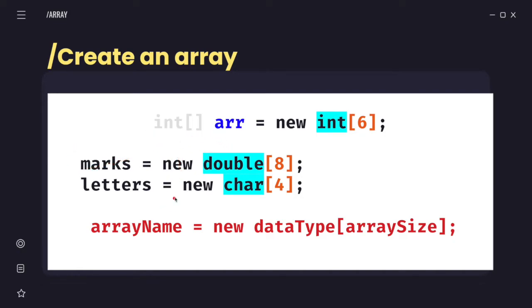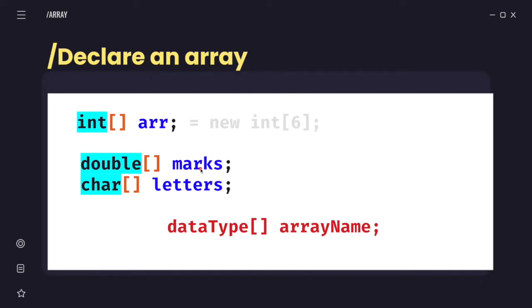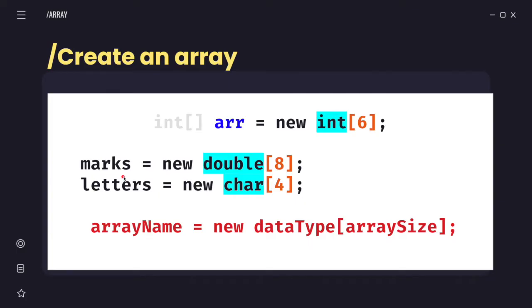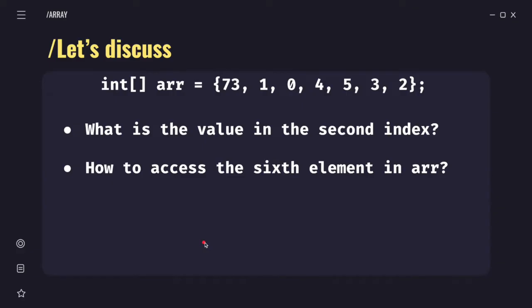So create an array - we have this template here. Array name equals to new data type in bracket array size. So earlier our example - array arr equals to new int 6, so array size 6. Earlier we used 7. And then marks equals to new double 8, letters equals to new char 4. Remember, this array name - if you declare here as mark and then suddenly you create as marks, there will be an error, a syntax error. They're not the same. So you need to be consistent.